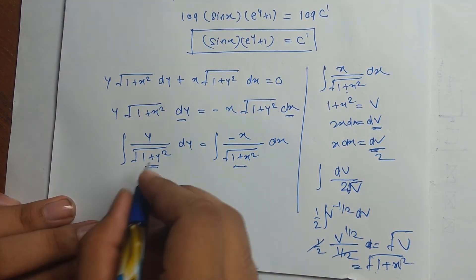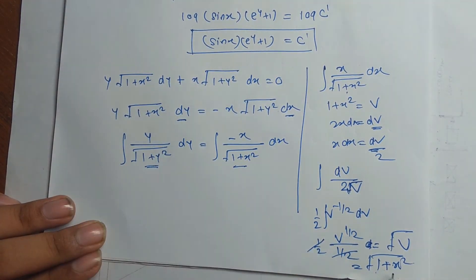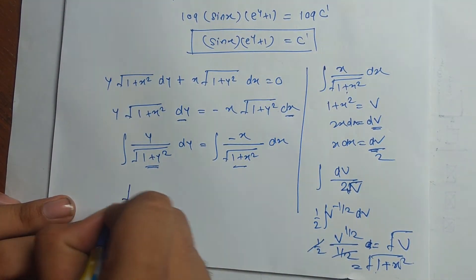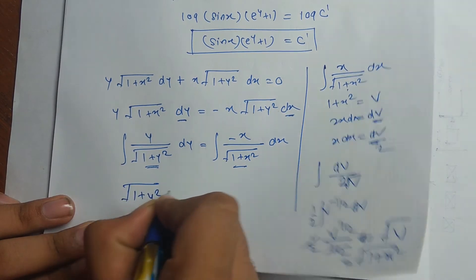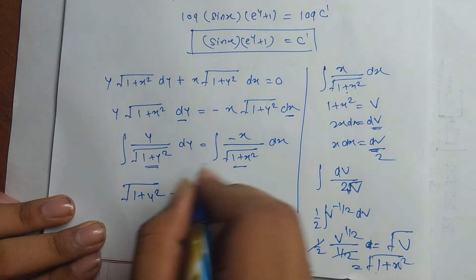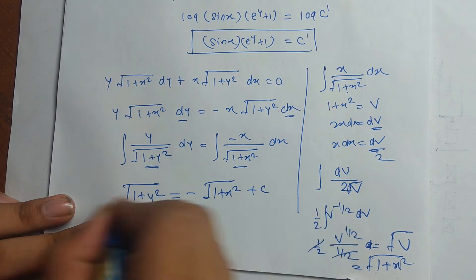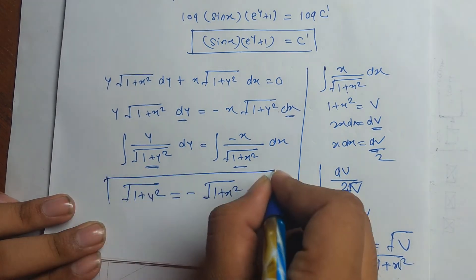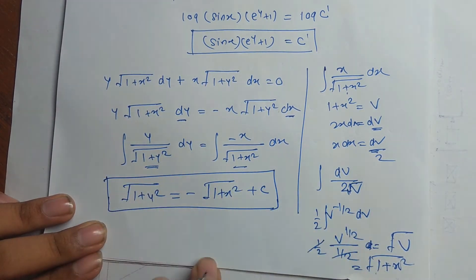So the final answer for the second equation is: √(1 + y²) = −√(1 + x²) + c.